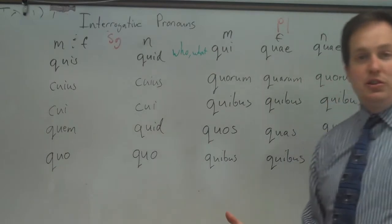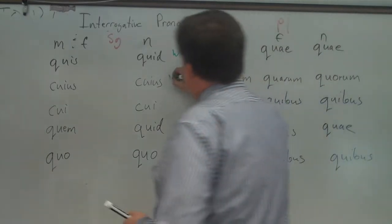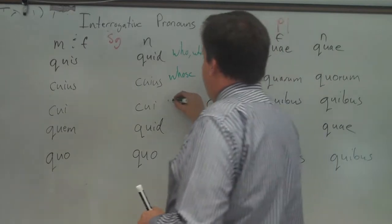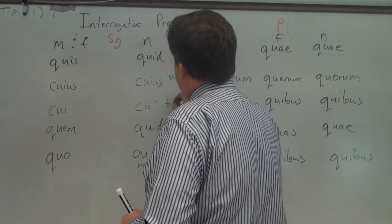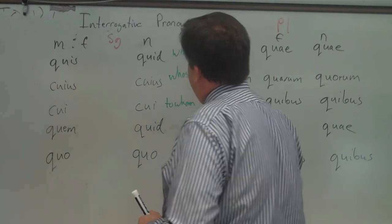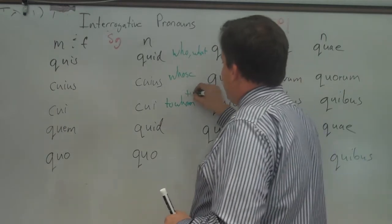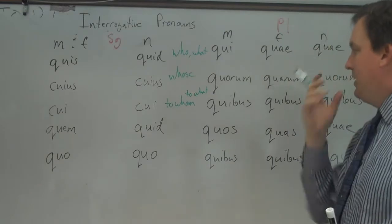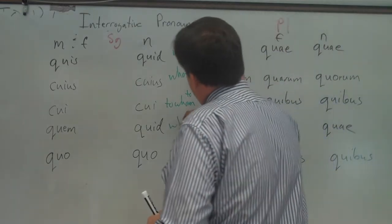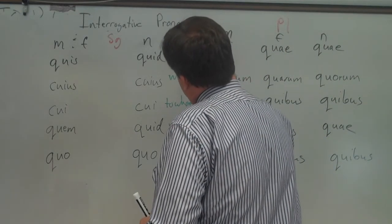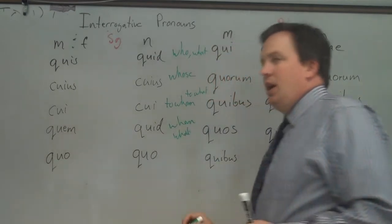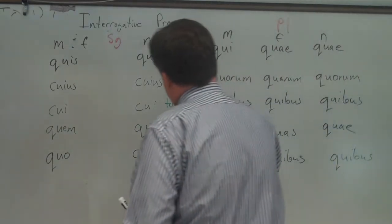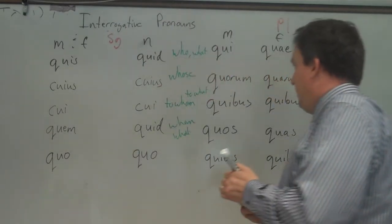It means who or what. Cuius is the genitive form. So that would make it mean whose. Cui would mean to whom or to what. And same thing for the plural. Quem and quid would mean whom or what. And the ablative would be with whom, by whom, from whom, etc. Or by what. Alright?